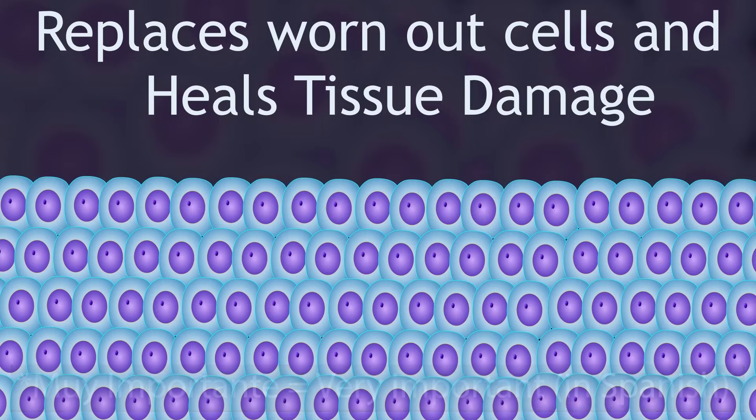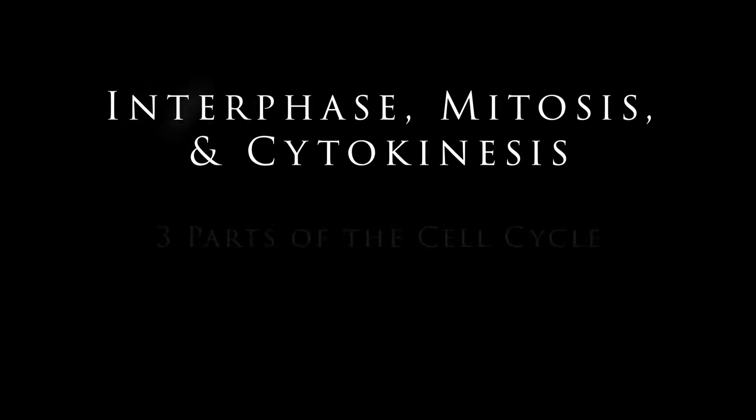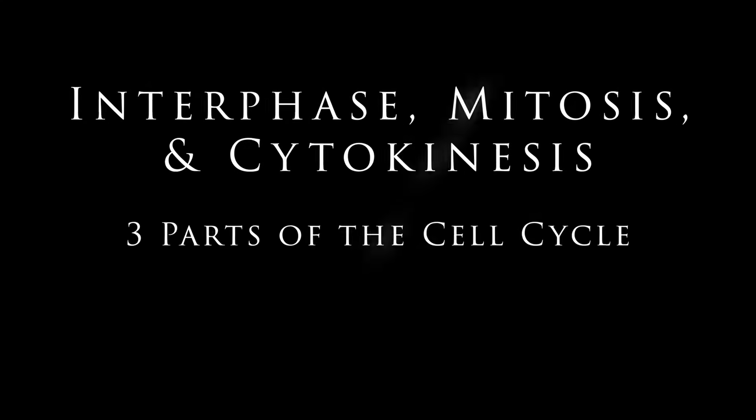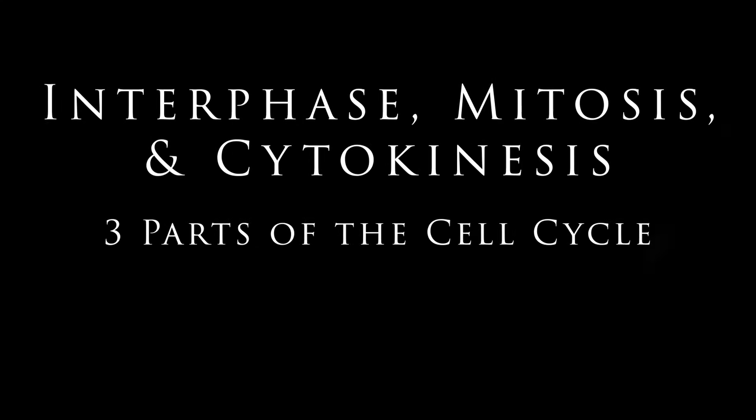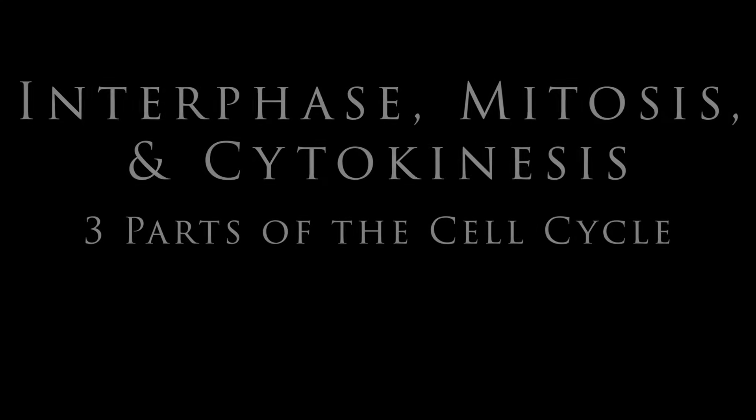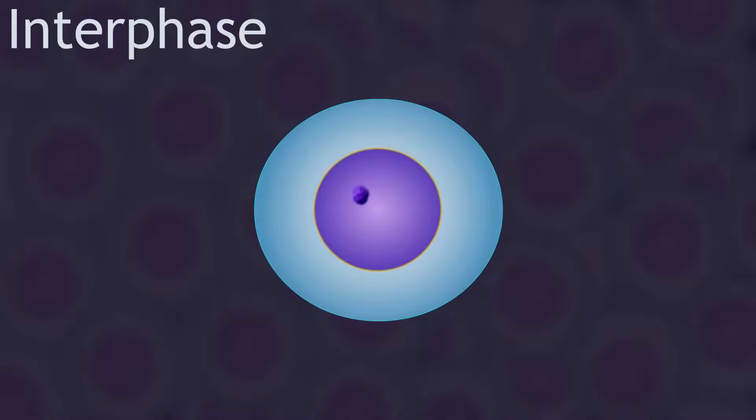The cell cycle has three main parts: interphase, mitosis, and cytokinesis. Let's begin with interphase.